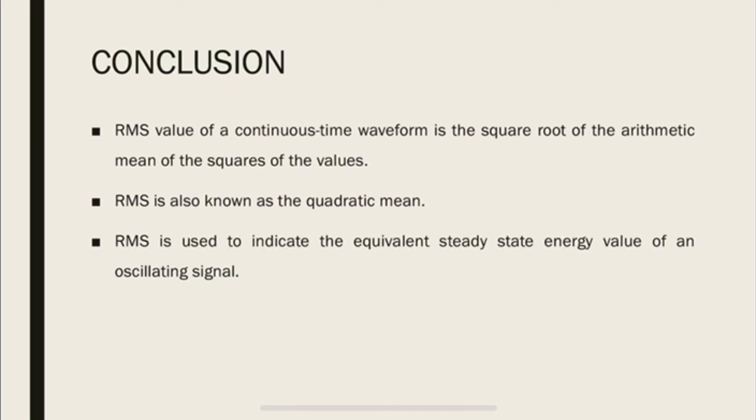So, to conclude, RMS of a continuous waveform is the square root of the arithmetic mean of the square of the values. It is also referred to as a quadratic mean. It is used to indicate the equivalent steady state energy value of an oscillating signal. All right. Thank you for watching. Have a great day.